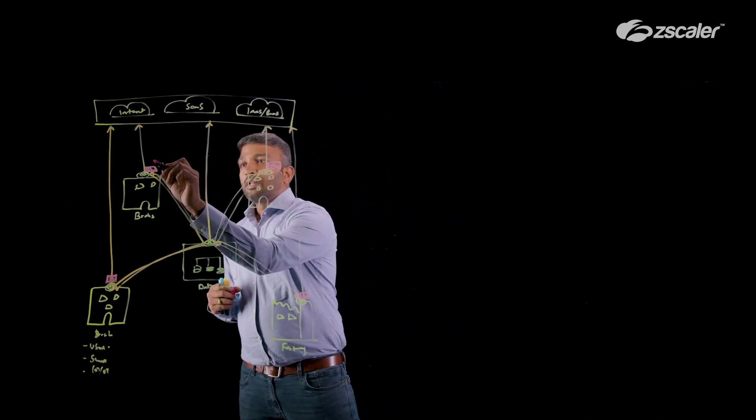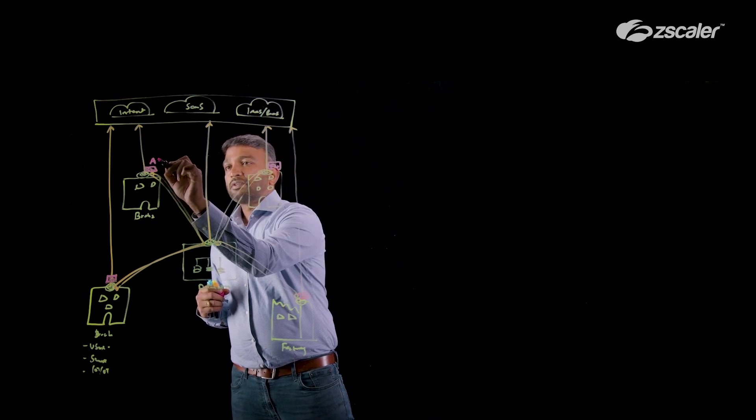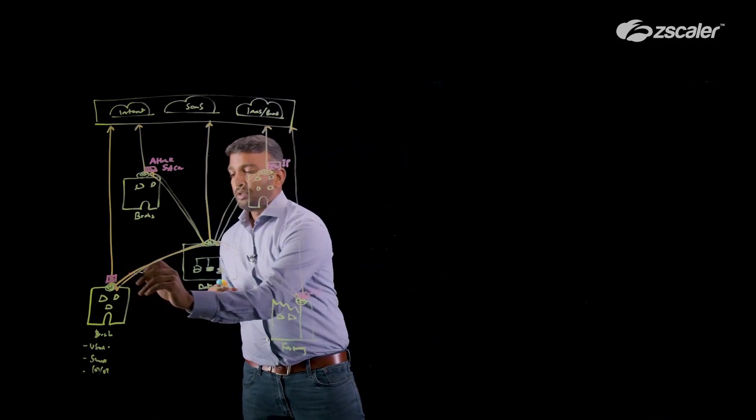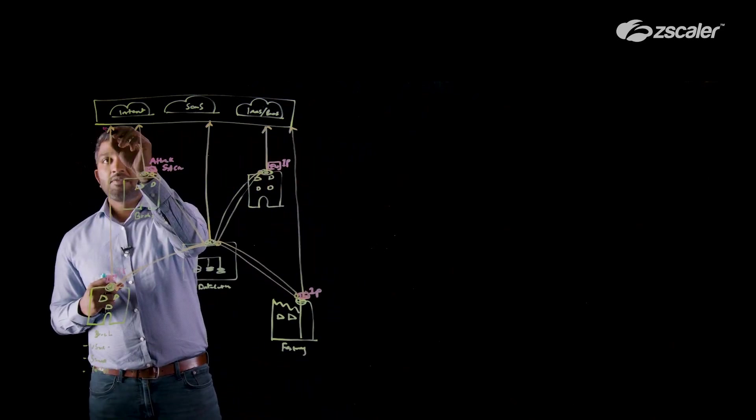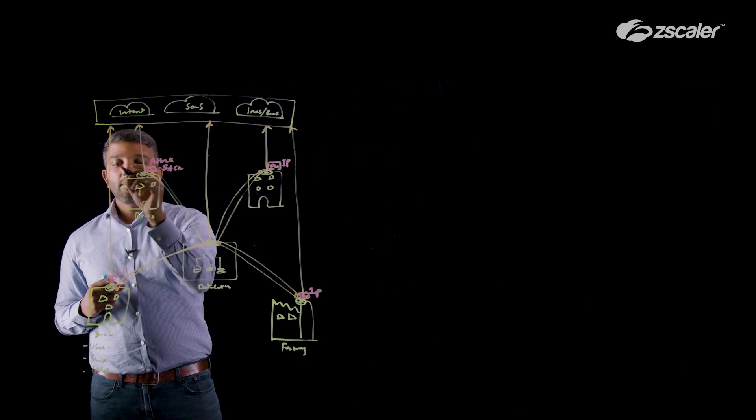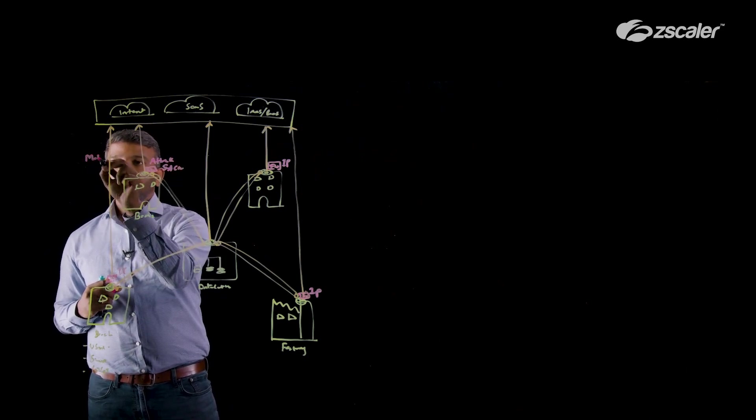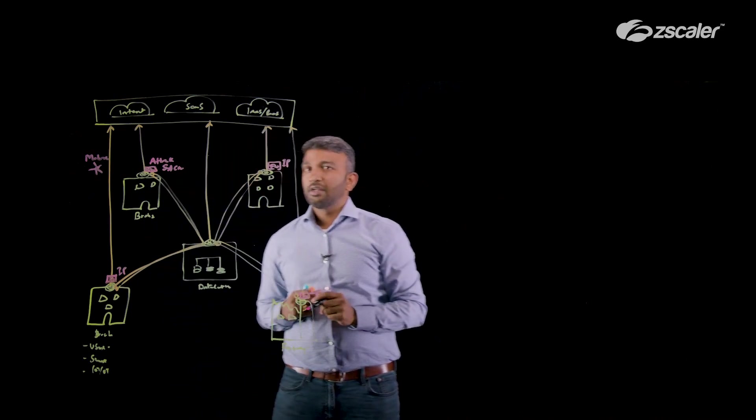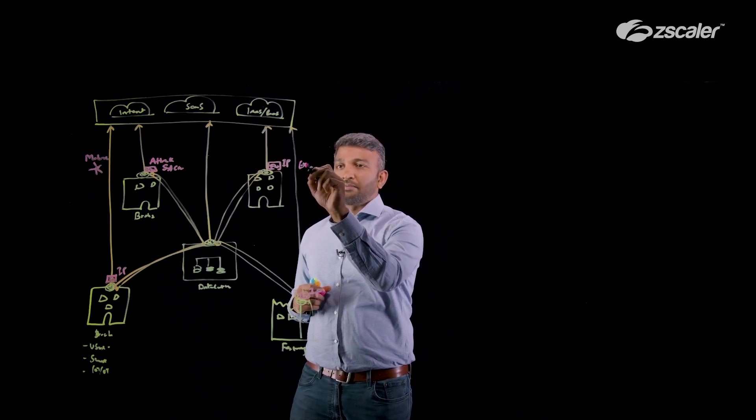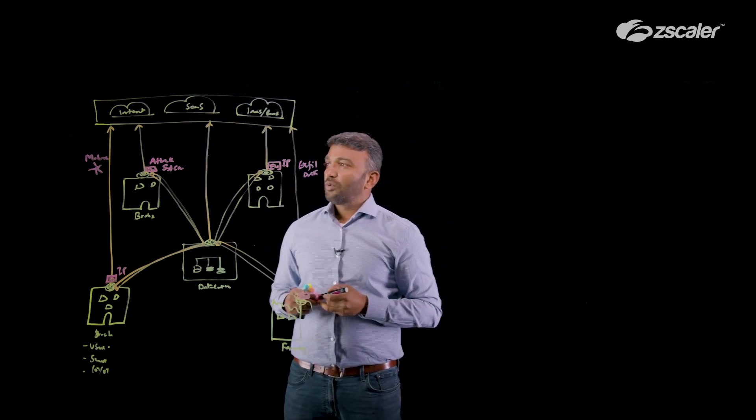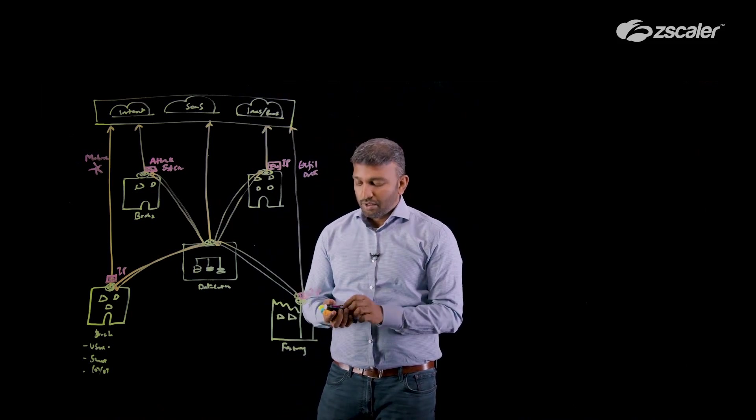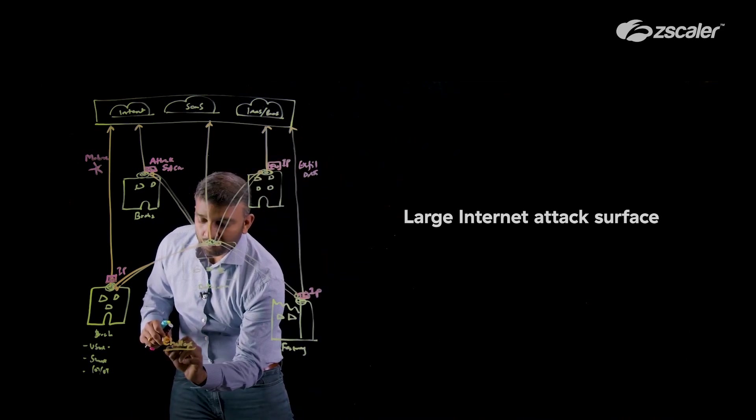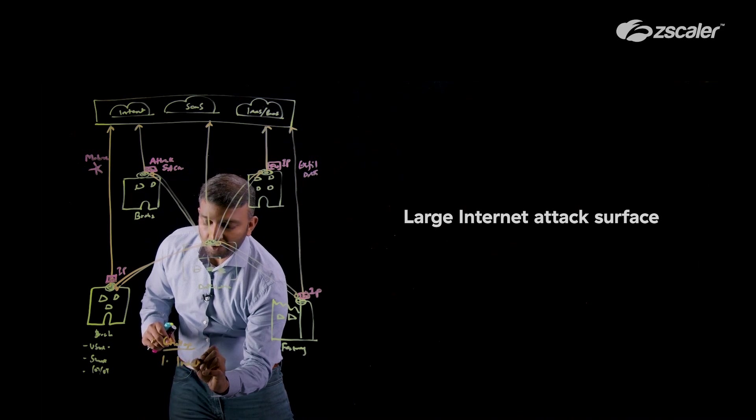That means there is a huge challenge of attack surface because these IP addresses are directly exposed to Internet. Any malware or any bad actor could see the IP addresses and use that as a vector for launching some advanced persistent threats and exfiltrate the data. That's one huge challenge when it comes to SD-WANs. Let me write down the challenge. The first challenge is Internet attack surface.